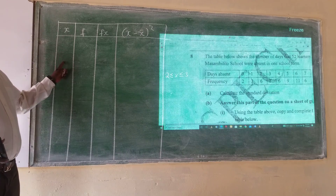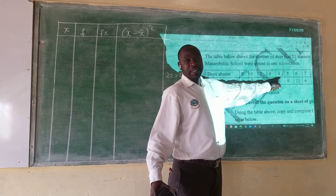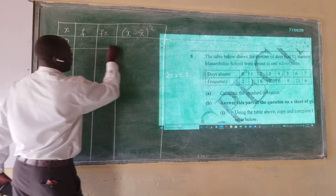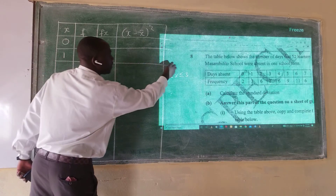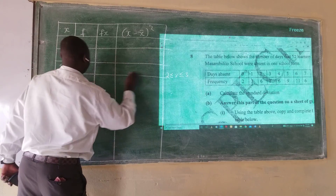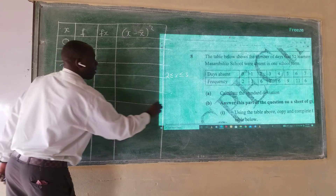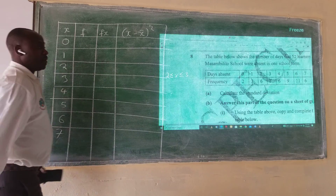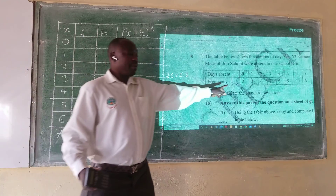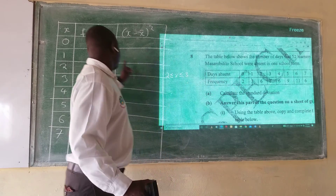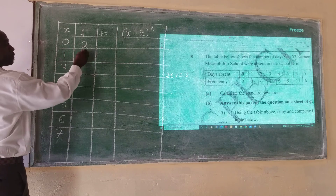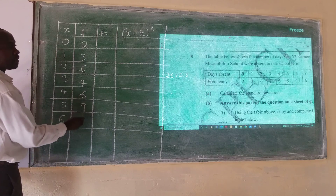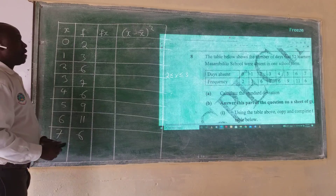For the x column, what we do is pick the days absent — this is your x. We write down: 0, 1, 2, 3, 4, 5, 6, and 7. For the frequency column, we just write down the corresponding frequencies: 2, 3, 6, 7, 6, 9, 11, and 6.